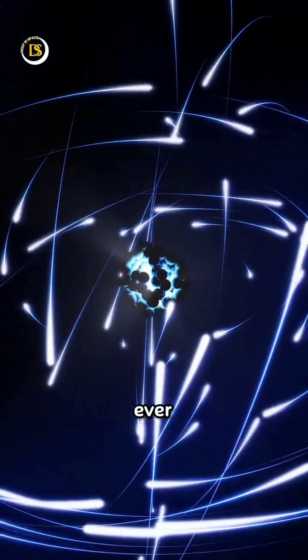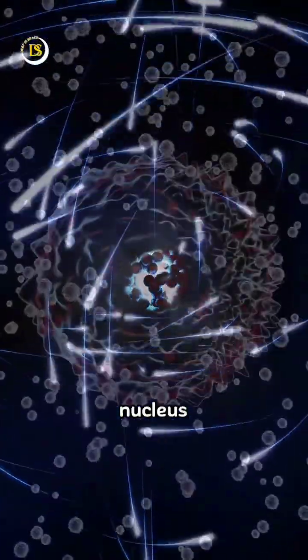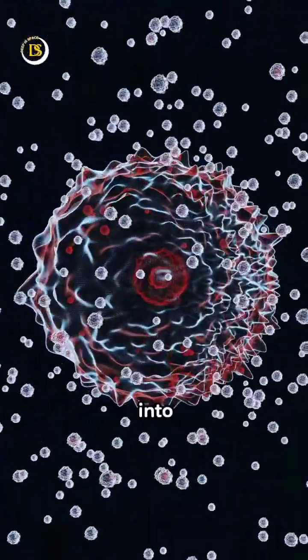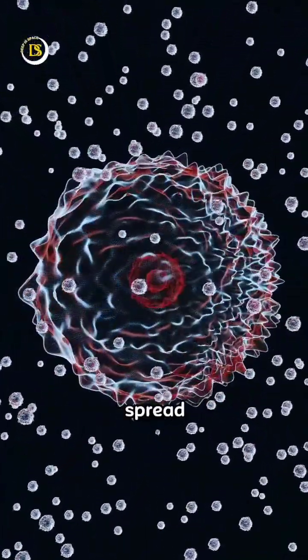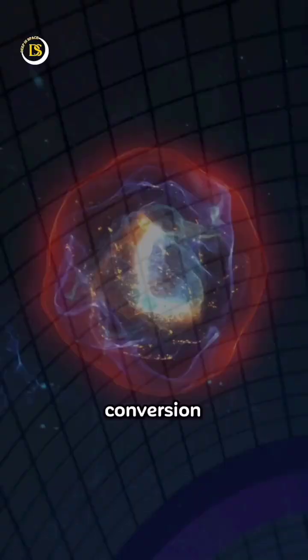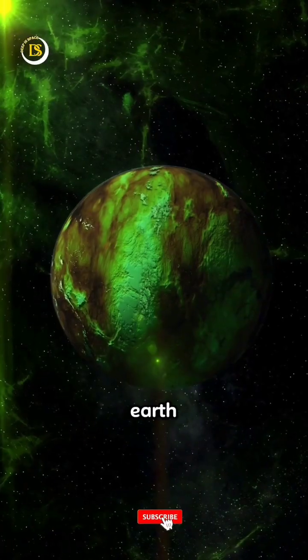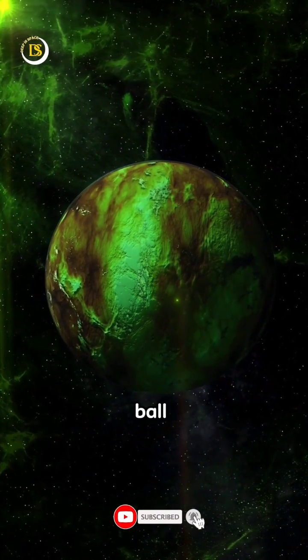That means if a strangelet ever comes into contact with a nucleus, it would spontaneously convert it into a strange nucleus, which would spread to another nucleus. The conversion would continue, and the whole Earth would be transformed into a huge ball of strange matter.